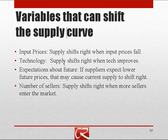If there are improvements in technology — especially improvements that reduce the cost of production — then producing the good will become more profitable and firms will be willing to produce more, and the supply curve will shift right.